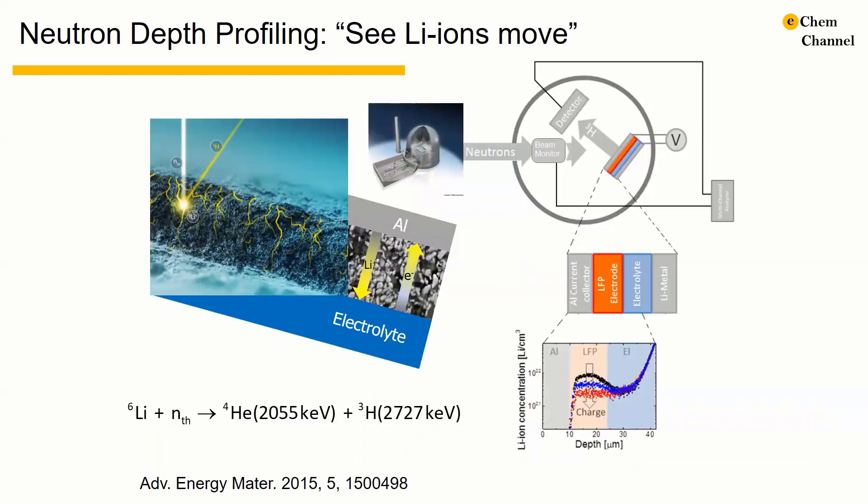In our neutron reactor in the Delft Reactor Institute, we have a neutron beamline dedicated for neutron depth profiling. When the neutrons come out from the reactor, it will hit the in-situ electrochemical cell that is connected to a charger.